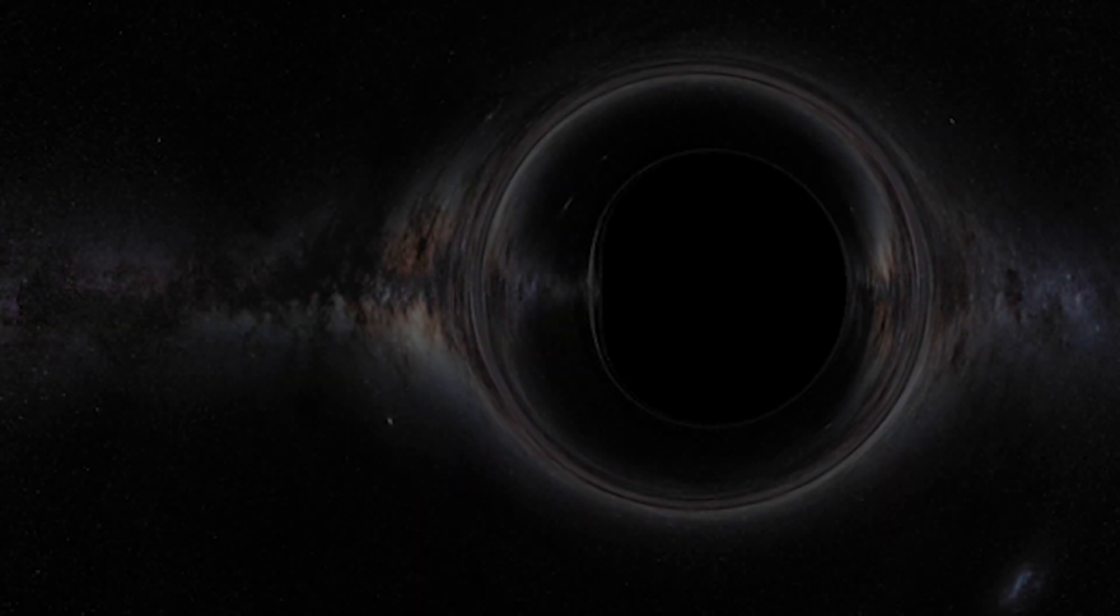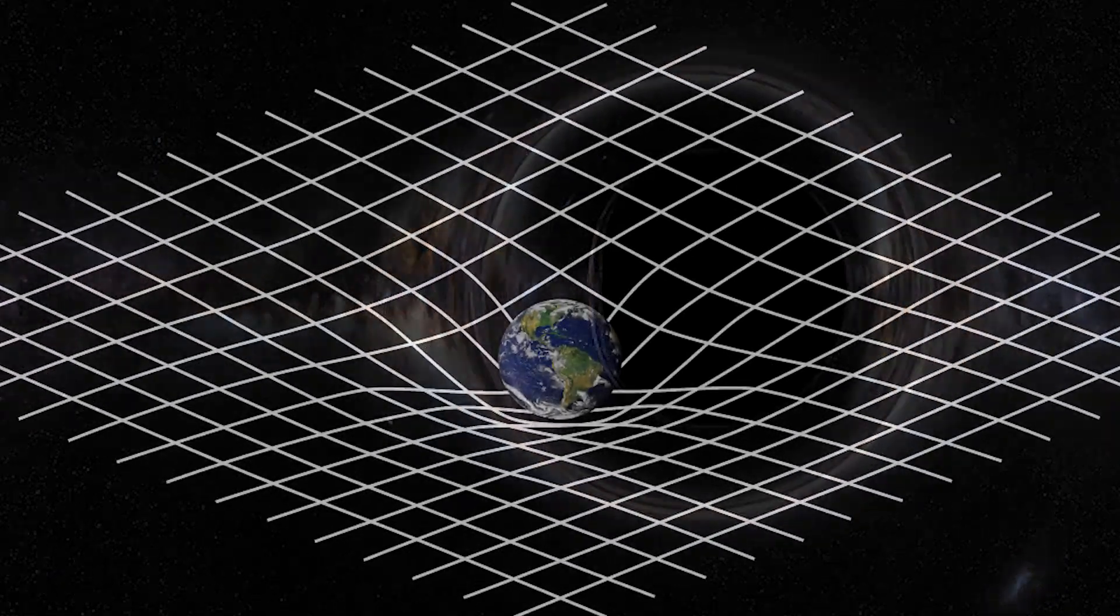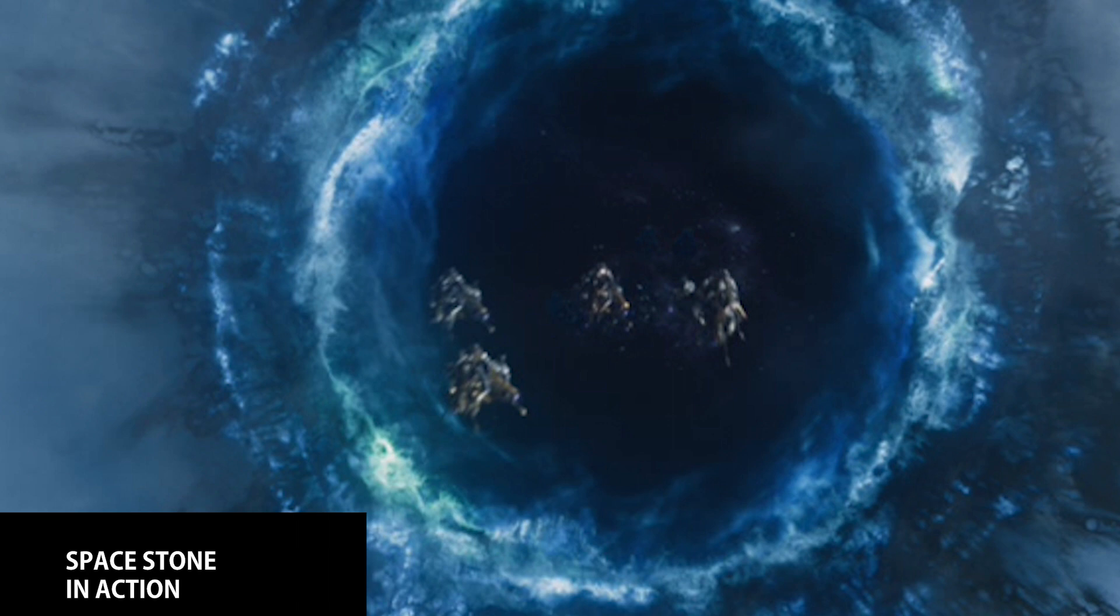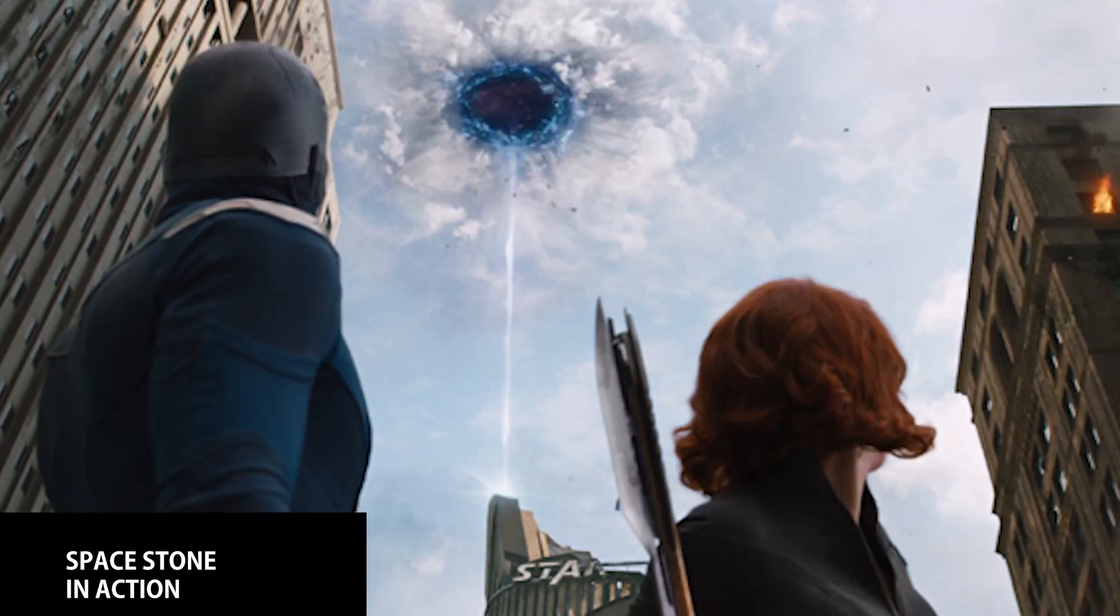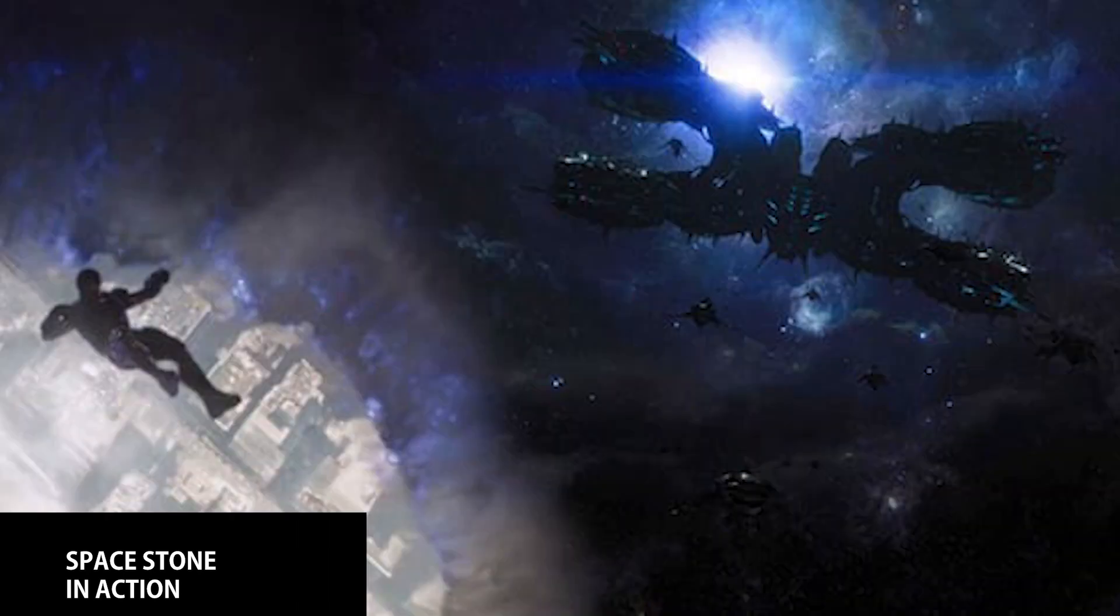And Einstein's theory of general relativity says lots of weird stuff. So in controlling gravity you could make black holes, you could change the curvature of space, and I guess you could make wormholes. Though it would sort of violate the second law of thermodynamics, but that's a different thing.